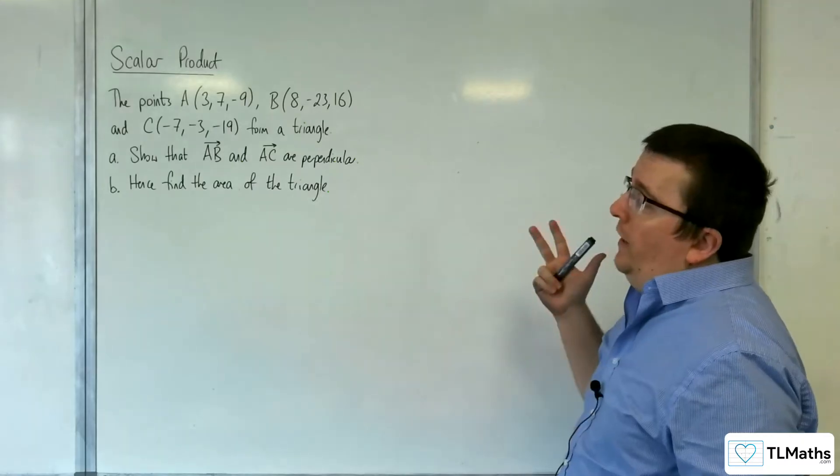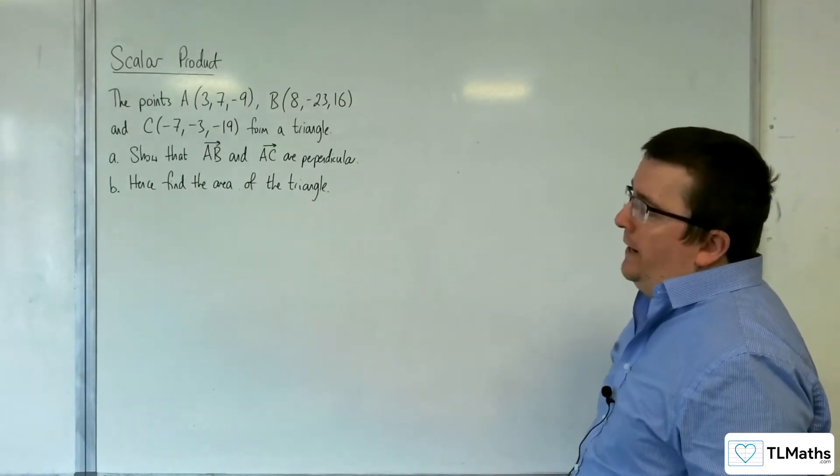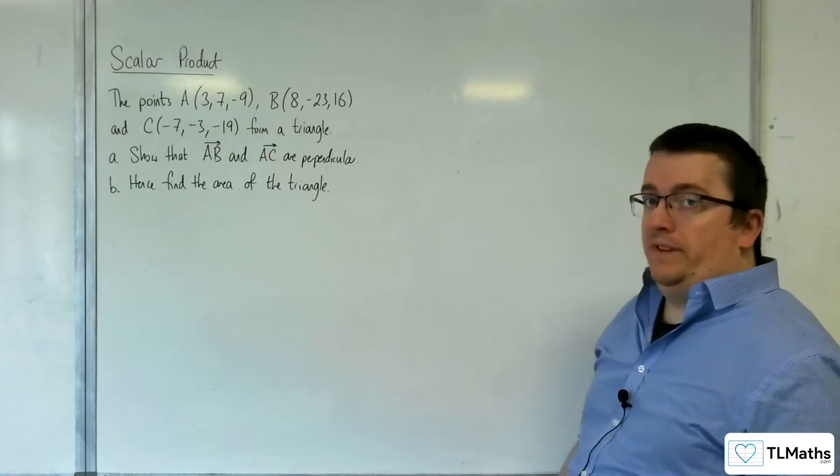In this problem we have the points A, B and C form a triangle. Part A: show that AB and AC are perpendicular.